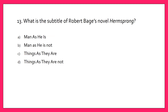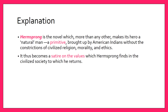What is the subtitle of Robert Bage's novel Hermsprung? A. Men as He Is, B. Men as He Is Not, C. Thinks as They Are, or D. Thinks as They Are Not. The answer is B. Men as He Is Not. Hermsprung is the novel which more than any other makes its hero a natural man — a primitive brought up by American Indians without the constructions of civilized religion, morality and ethics. It thus becomes a satire on the values which Hermsprung finds in the civilized society to which he returns.